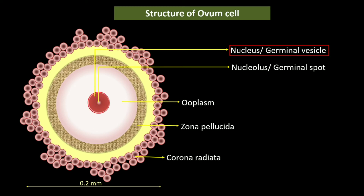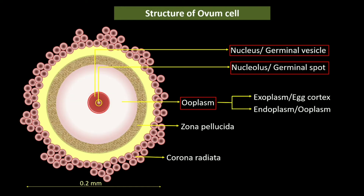The structure of the nucleus of the ovum is the same as that of an ordinary cell. It is enclosed in a nuclear membrane, and within the nucleus a well-defined nucleolus, or germinal spot, is present. The ooplasm is differentiated into an outer transparent exoplasm, or cortex, and an inner opaque endoplasm called ooplasm.